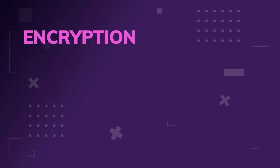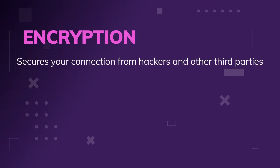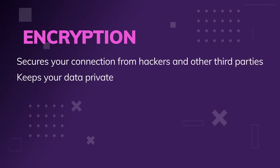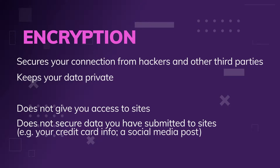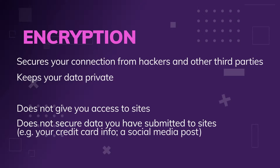Let's talk about what encryption does and doesn't do, just to make sure we've got everything straight. Encryption secures your connection from hackers and other third parties so long as the data is traveling between the VPN and the website you're browsing to. It does keep your data private along that route. However, it does not give you access to sites or anything to do with accessing sites in other countries. It's just a security measure, and it does not secure data you've submitted to sites. So if you use a VPN to go to Amazon and buy something with your credit card, encryption will do nothing to protect your data from getting hacked — it only protects your data while it's in transit.